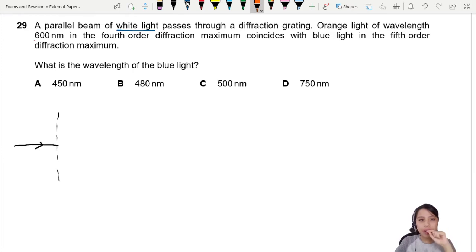Orange light 600 nm in the fourth order maximum coincides with blue light in the fifth order maximum. What does coincides mean? Coincides means that they overlap. So if you look at your orange light, this is zero. Orange light will be somewhere here, nice orange color.